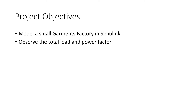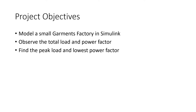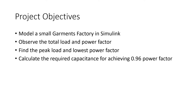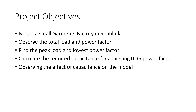Project objectives: first, we model a small government factory and observe the total load and power factor in the circuit. Then we find the peak load and lowest power factor before connecting the capacitor bank. We then calculate the capacitance required to achieve 0.96 power factor or better, observe the effect of the capacitance on power factor improvement, and calculate the cost and savings from power factor improvement.